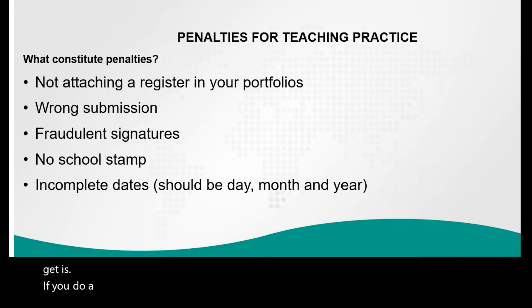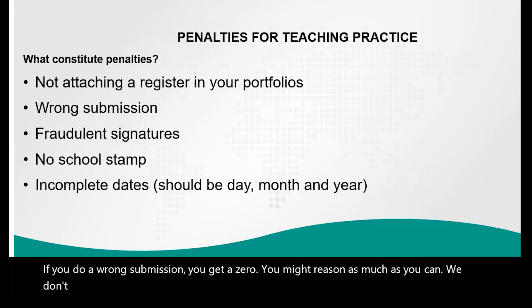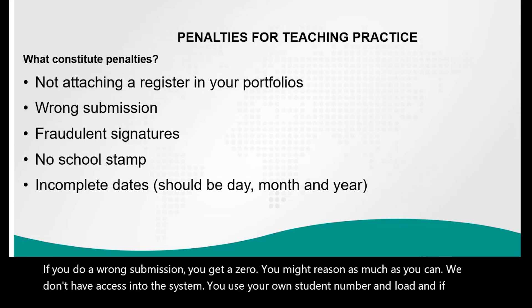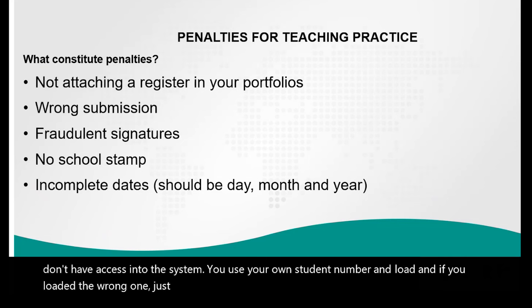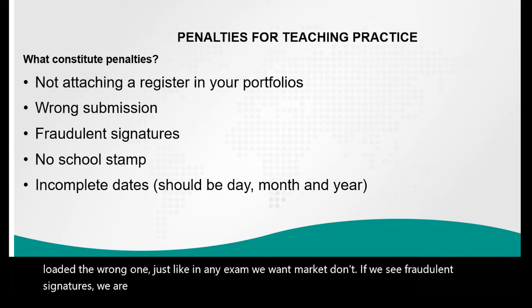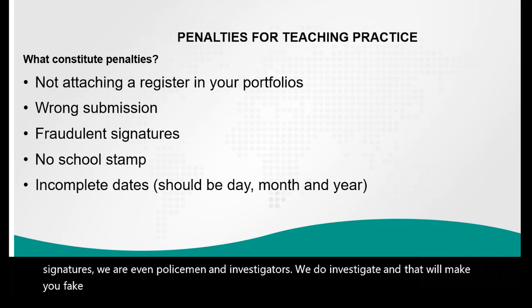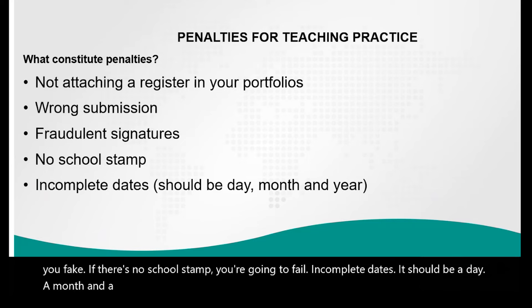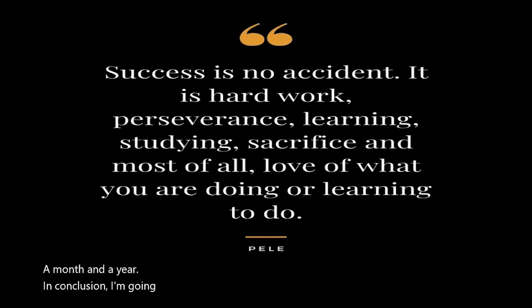Penalties: if you don't attach your register you get a zero; if you do a wrong submission you get a zero; if we see fraudulent signatures we do investigate and you will fail; if there's no school stamp you will fail; incomplete dates — missing the day, month, or year — will also result in a zero.